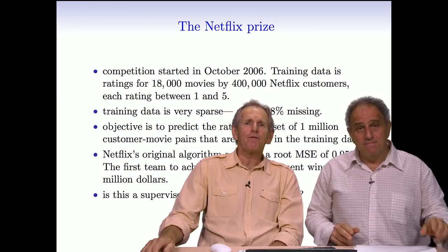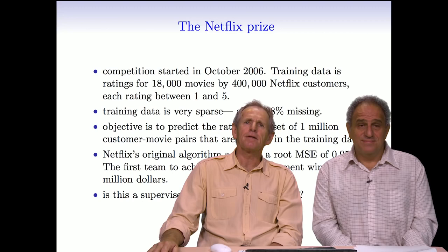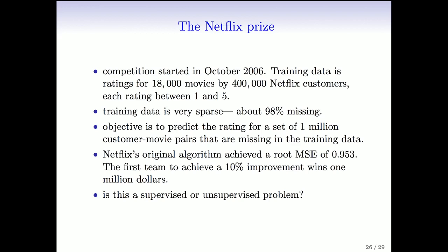A wonderful example is the Netflix Prize. Netflix is a movie rental company, and they set up a competition to improve their recommender system. They created a dataset with 400,000 Netflix customers and 18,000 movies. Each customer had rated, on average, around 200 movies — so each customer had seen only about 1% of the movies. You can think of this as a very large, very sparsely populated matrix of ratings between one and five. The goal is to predict what customers would think of other movies. Netflix offered a $1 million prize for the first team that could improve their rating system by 10%.